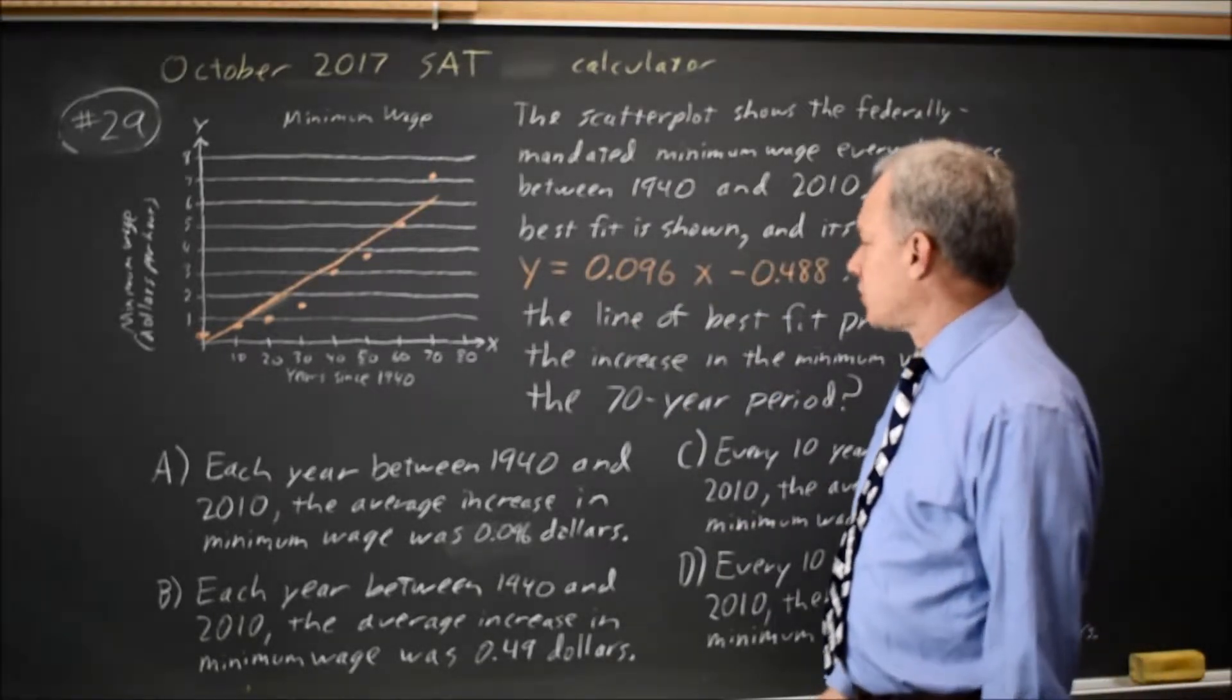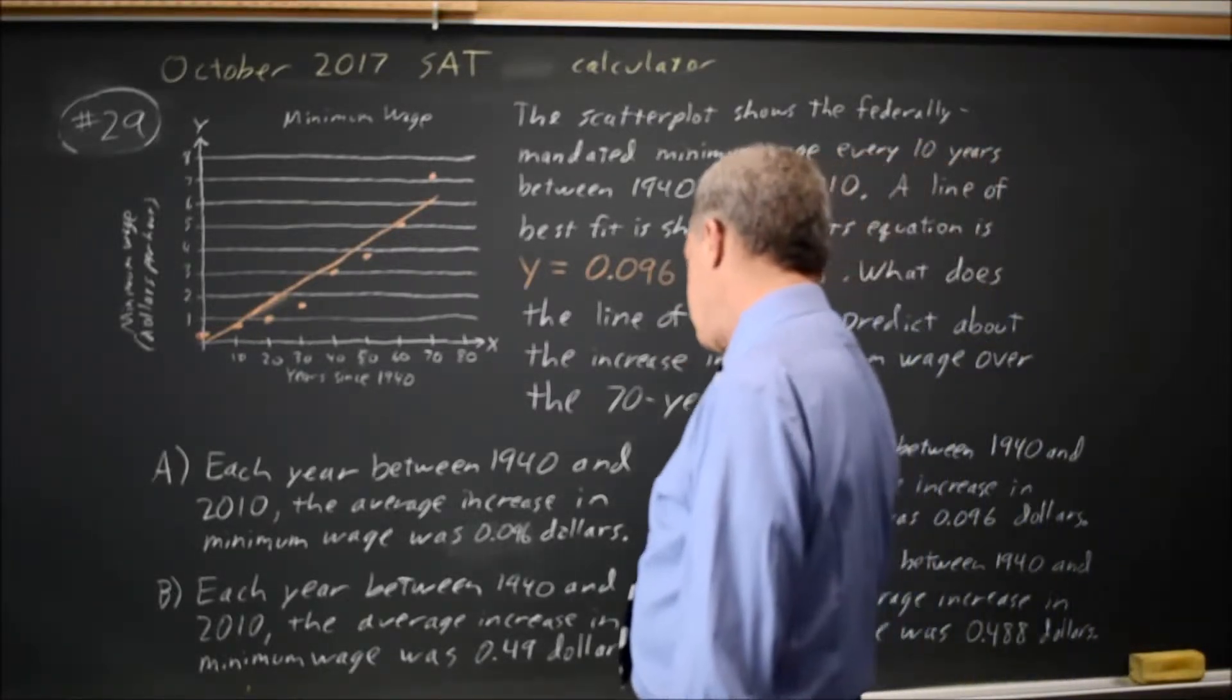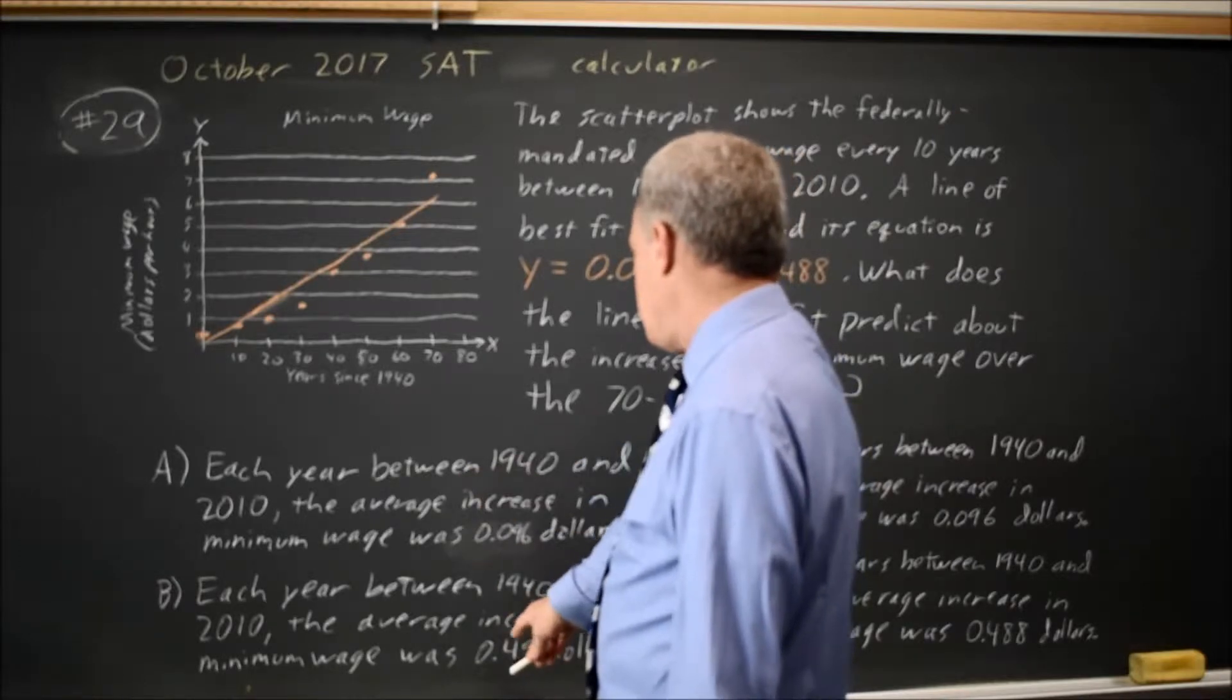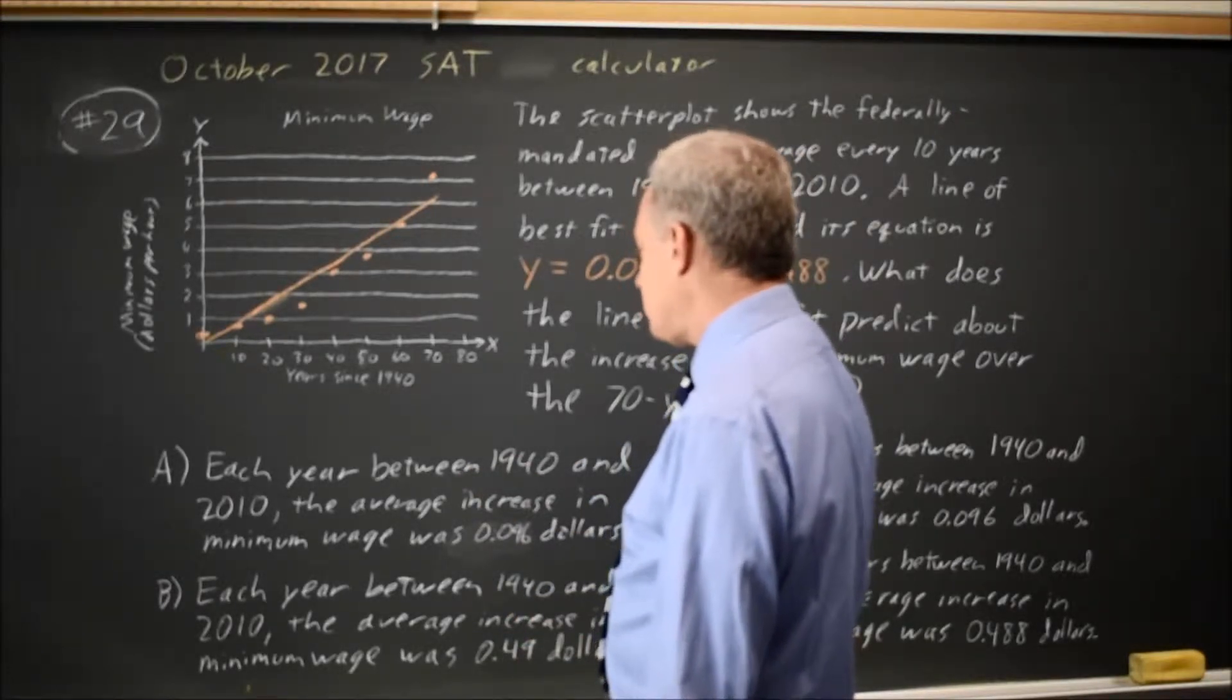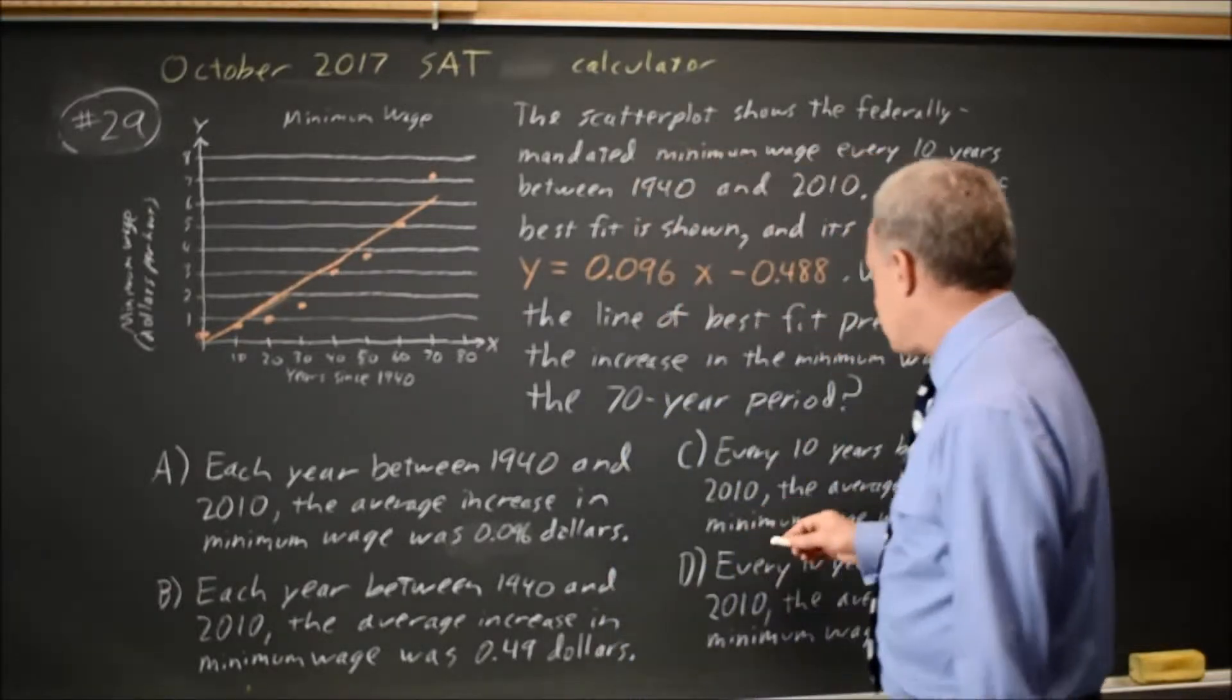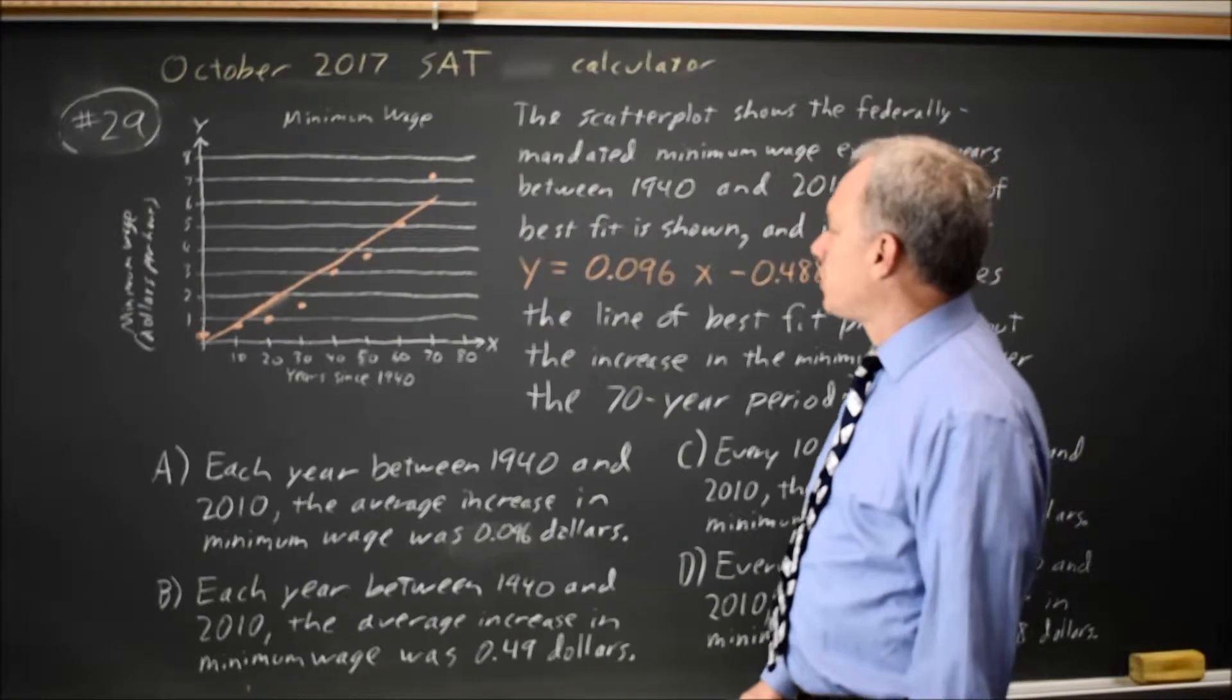They ask for an interpretation of this equation where choices A and B talk about the average increase each year, and C and D talk about the average increase each decade, so they're asking about the slope.